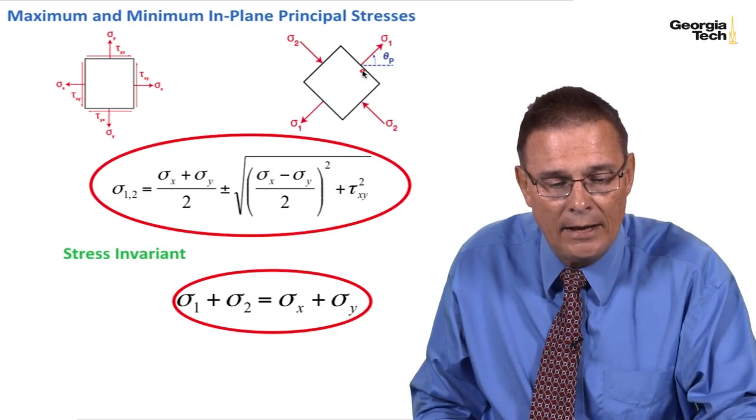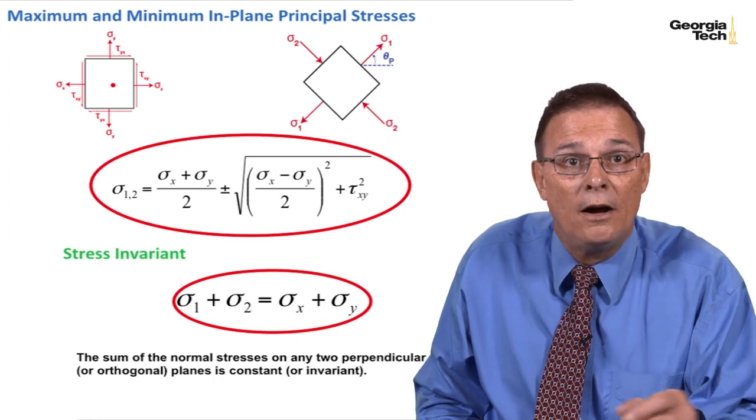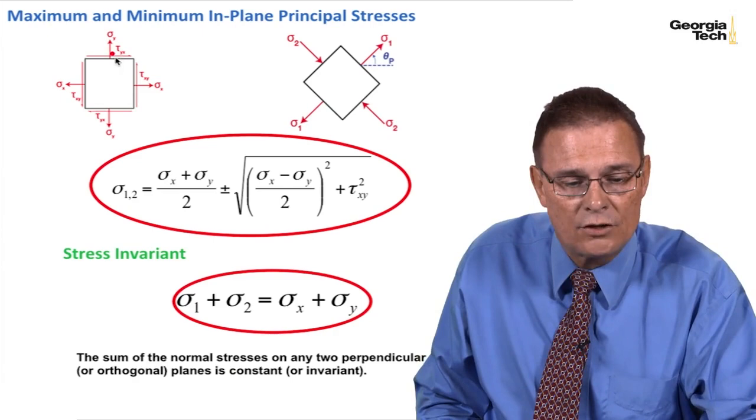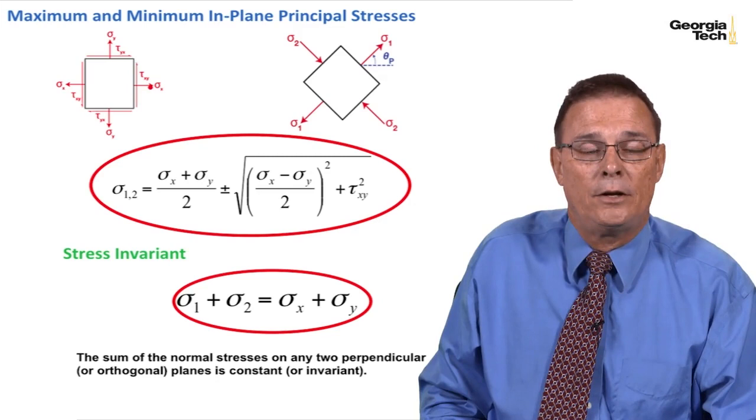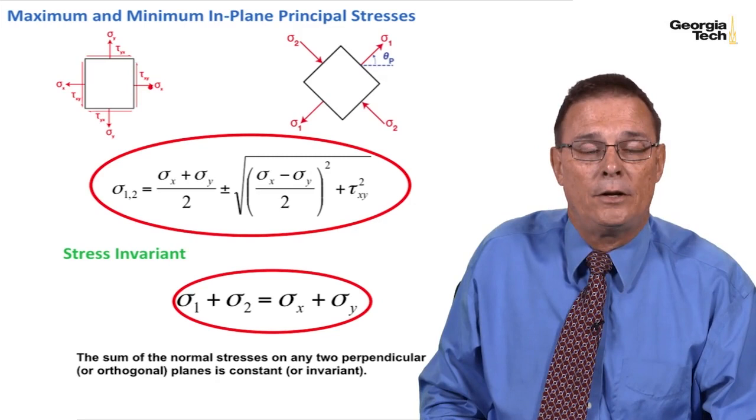So what it's saying is on any two orthogonal planes, the sum of the normal stresses are going to be constant. And so no matter how we turn the block, the sum of the normal stresses on two orthogonal planes is going to be invariant or constant. And so that's where we'll leave off this time some important relationships and we'll continue on next time.